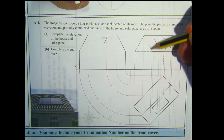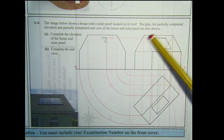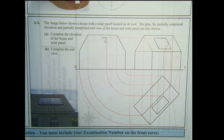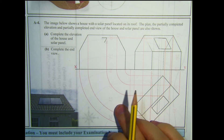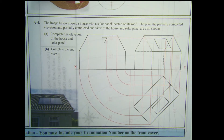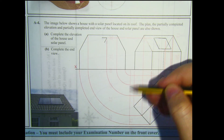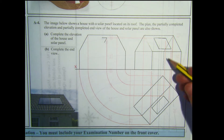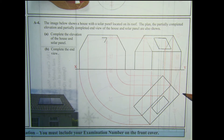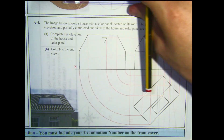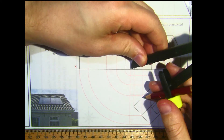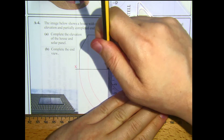For the elevation, both points for one line are already located; for the other we need to extend and project the two corners up. For the end view, we need to project lines across and up. I've put in a projection line — everything must come over to this line first before it is rotated up. We're looking from the right-hand side, so I'm going to find what we see from that side first, taking this edge across to the rotation line.